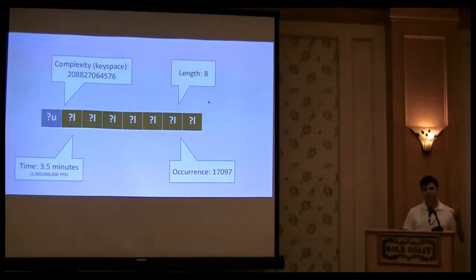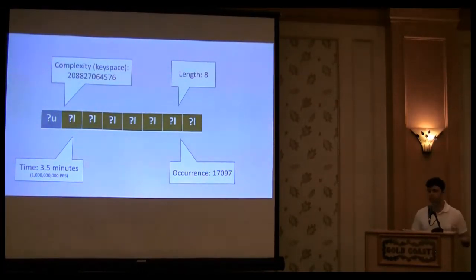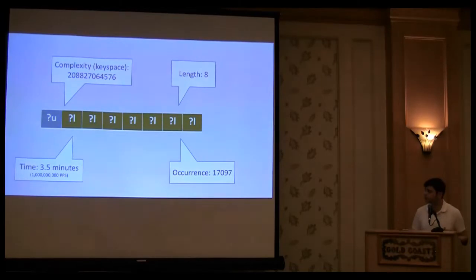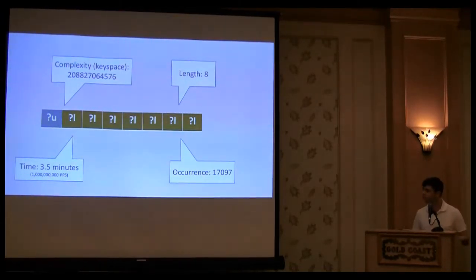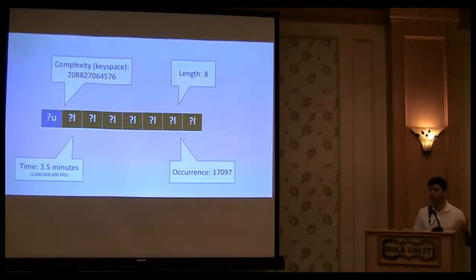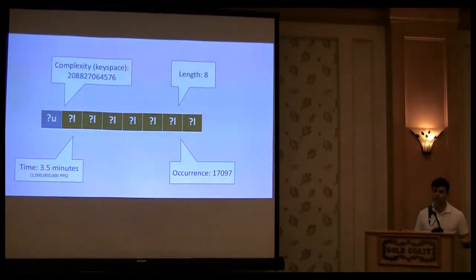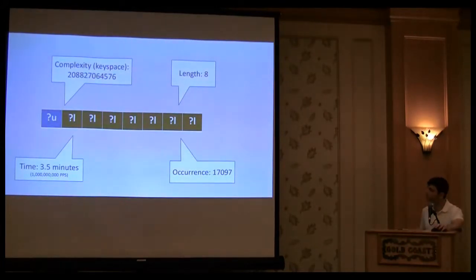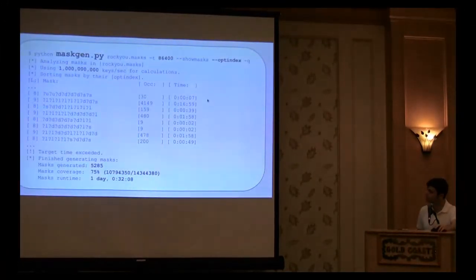Thinking a little bit more about what masks are and what information it holds, we can tell some interesting facts. Based on a mask, we can say how long it is. In this case, it's 8 characters. Based on analysis of a leaked list, we can say how many times it occurs. For RockYou, it occurred 70,000 times. At the same time, given that we know character set per position, we can calculate its complexity or key space. And we can estimate how long it's going to take to run with 1 billion keys per second benchmark.